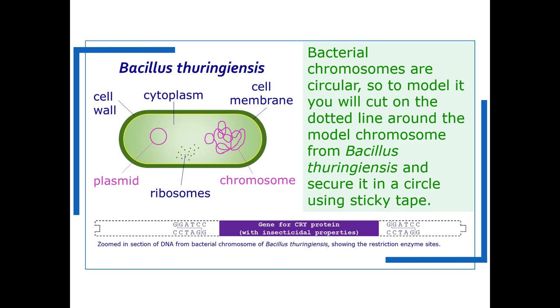Now bacterial chromosomes are circular so to model it you need to cut around the dotted line and secure the template in a circle using sticky tape.